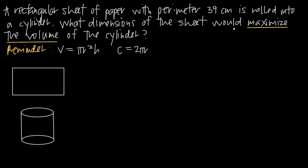Because we're trying to maximize the volume, we're going to need a function for the volume of the cylinder. That's the function we're going to be working with. The volume of a cylinder is given by the formula V = πr²h. So this is the formula we're going to start with.